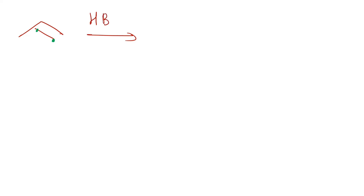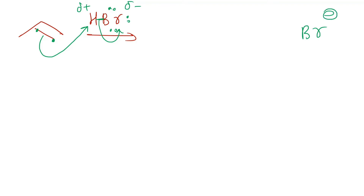Let's learn this with an example. Alkene has a pi bond, and pi electrons are more reactive. With hydrogen bromide as the reactant: bromine has lone pairs, so this is the δ⁺ region (H) and δ⁻ region (Br). The pi electrons attack H⁺ and this bond breaks, giving the two electrons to the bromine. The bromine is leaving as a nucleophile.